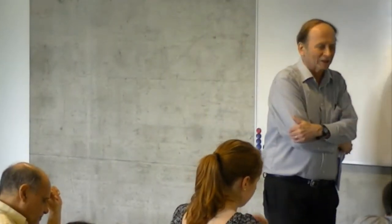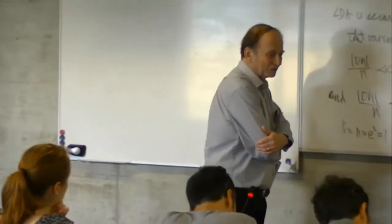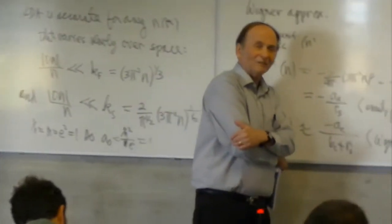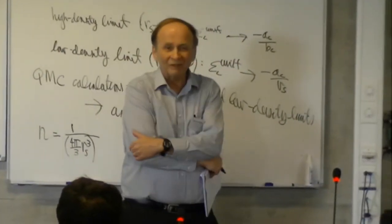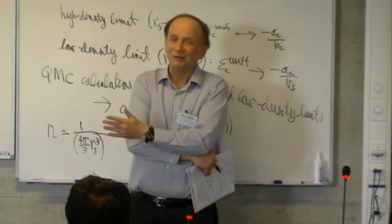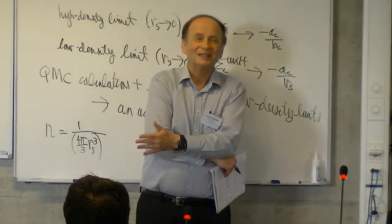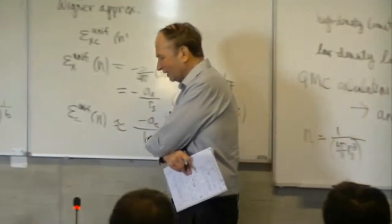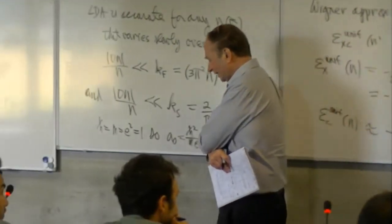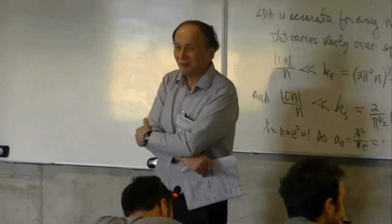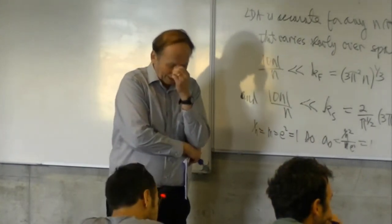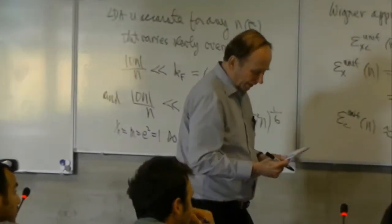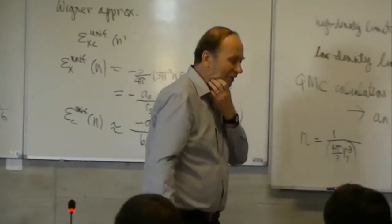We now have more accurate input for LDA, but we also have more accurate functionals than LDA. LDA was the simplest starting point that Kohn and Sham made. Once I asked Walter Kohn what he expected from the local density approximation when he published it in 1965, and he said: 'We expected it to be better than the Hartree approximation.' The expectations were pretty low. But when people started to test it, it was better — actually better than the Slater X-alpha too.